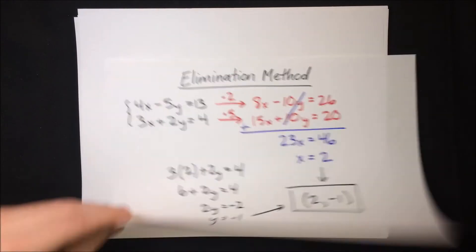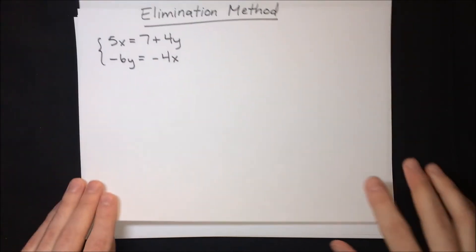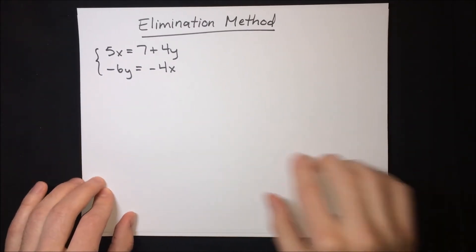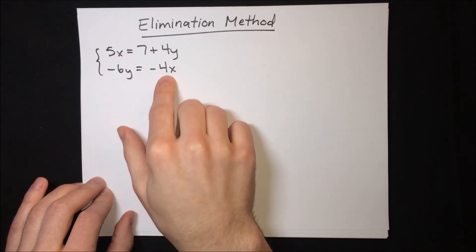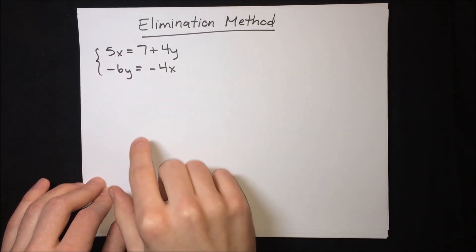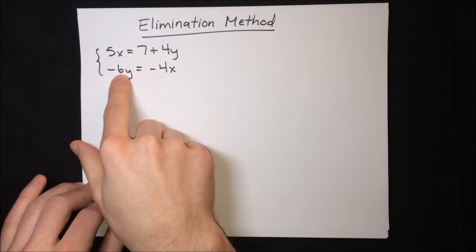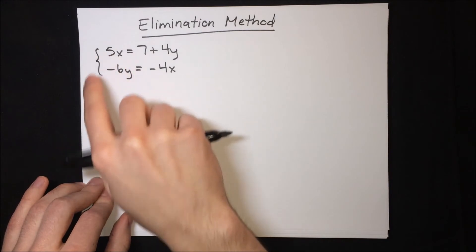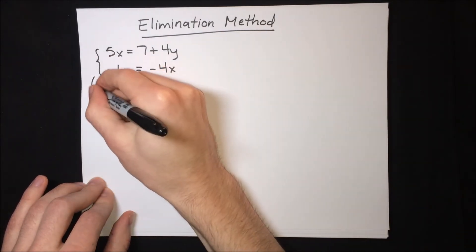Let's do an even harder example. This example is even harder because not only do we not have the same terms in both equations, but the equations are kind of jumbled up. The x isn't aligned with the x and y isn't aligned with y. So our first step should be to rearrange the equations a bit to get them more organized.